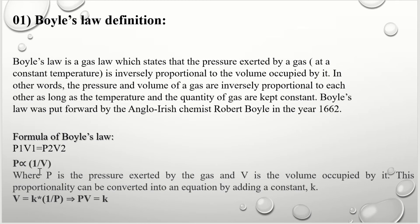P is inversely proportional to V, where P is the pressure exerted by the gas and V is the volume occupied by it. This proportionality can be converted into an equation by adding a constant k, that is, V equal to k into 1 by P, or PV equal to k.